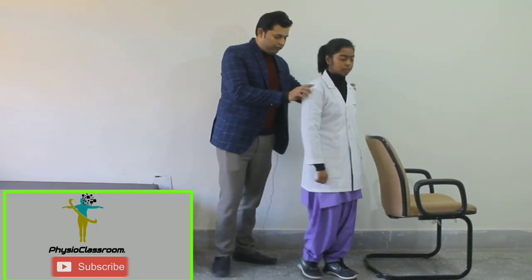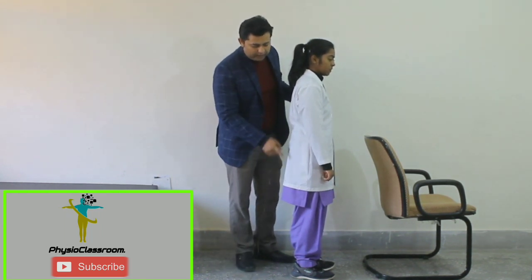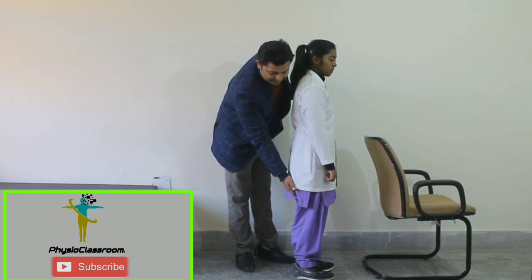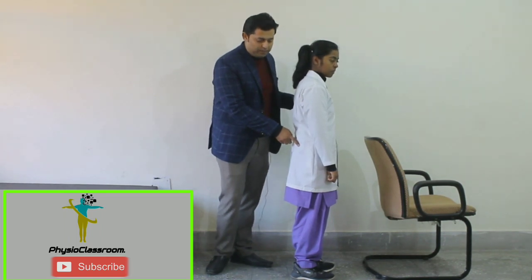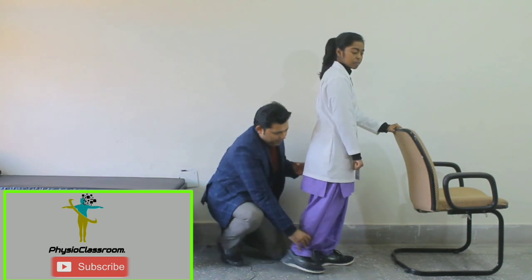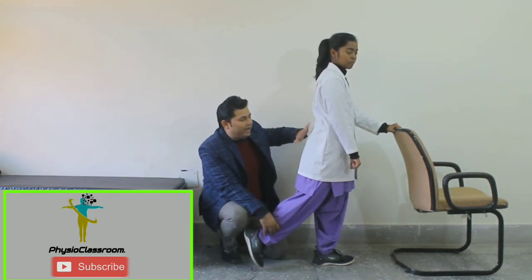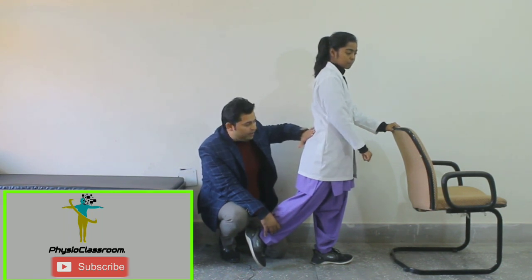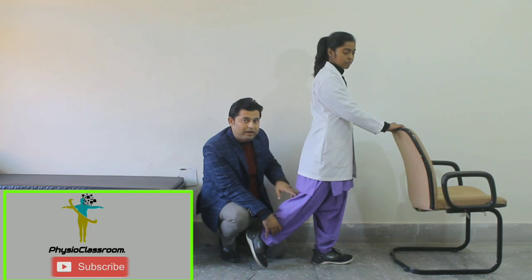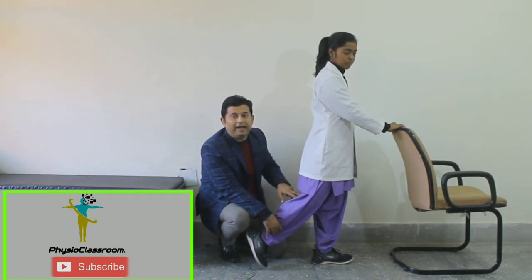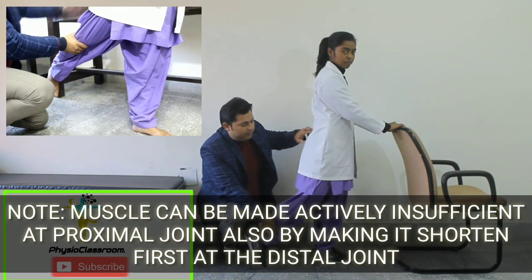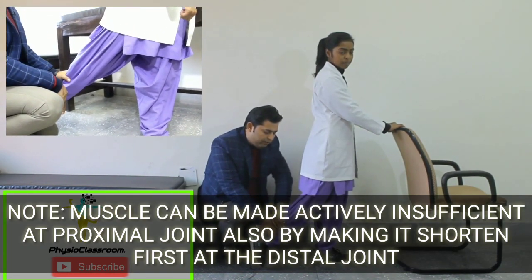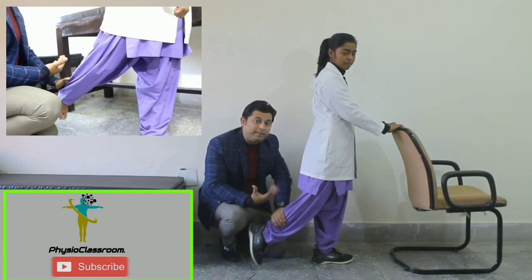To demonstrate active insufficiency in the hamstring — another two-joint muscle crossing the hip and knee, responsible for extending the hip and flexing the knee — we first shorten the hamstring at the proximal joint by extending the hip. With the hip extended, the hamstring is already shortened there, so its ability to maximally contract at the knee is compromised. Vartika attempts to bend her knee from this position and the force generation is notably poor.